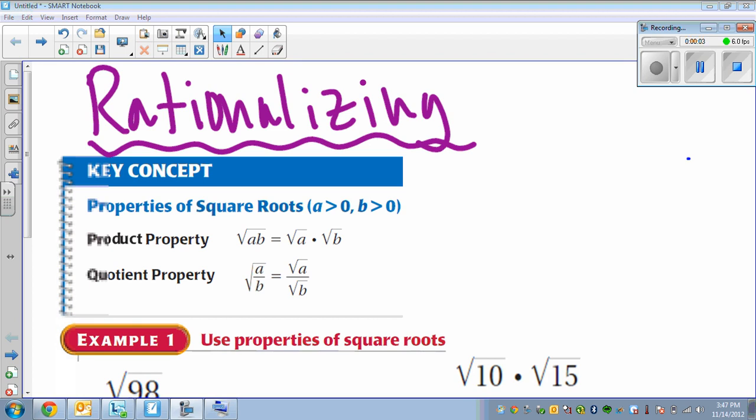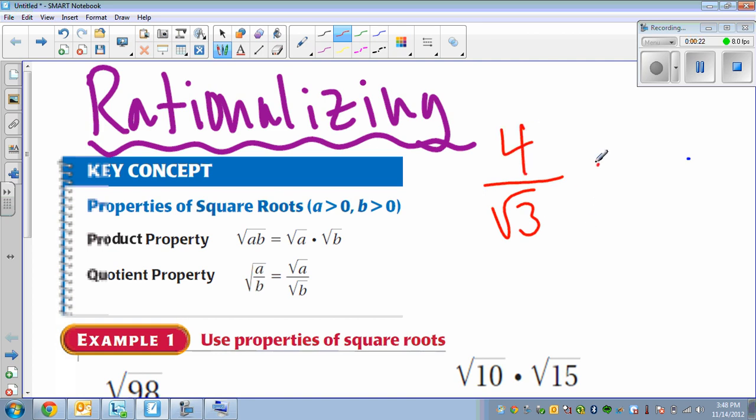Hello everybody, so in this video we are talking about rationalizing. Rationalizing just means turning a fraction from a gross-looking thing, something like this, it doesn't even matter what's on top, but this would be counted as ugly by mathematicians because it has a square root on the bottom.